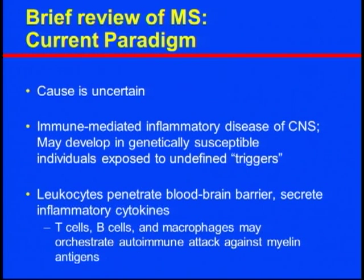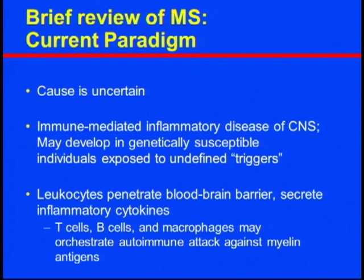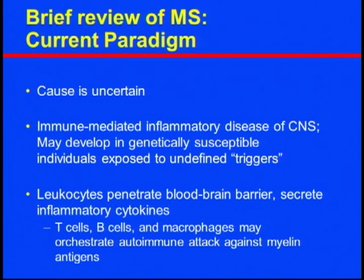The current paradigm of MS: the cause is unknown, but we know it's an immune-mediated inflammatory process. It may develop in folks who are inherently more prone, though we don't know the exact genetic factors or trigger. Leukocytes and inflammatory immune cells cross the blood-brain barrier, secreting inflammatory cytokines. T cells, B cells, and macrophages together damage myelin, oligodendrocytes, and neurons in the CNS.